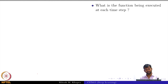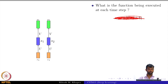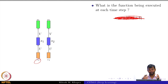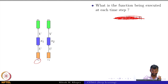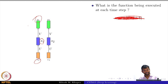We will focus on each of these items from our wish list and try to arrive at a model. First, let us ask: what is the function being executed at each time step? You have an input, a hidden representation, and then you have an output. This is the first time in the entire course where we see this situation.